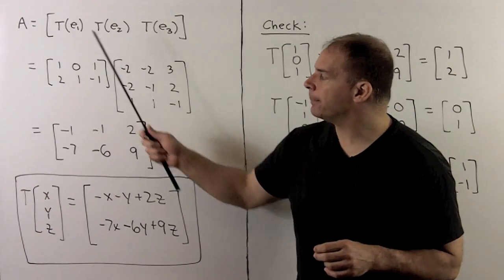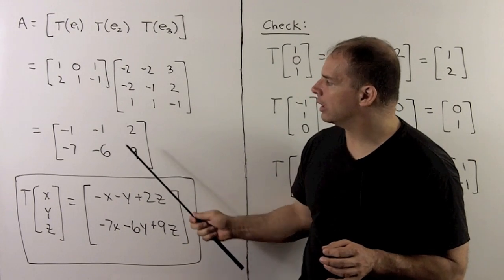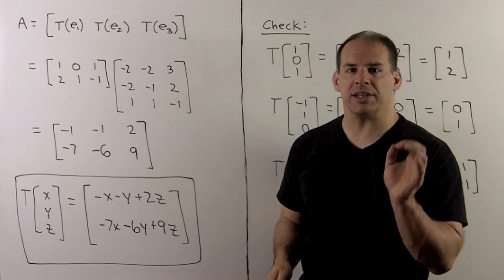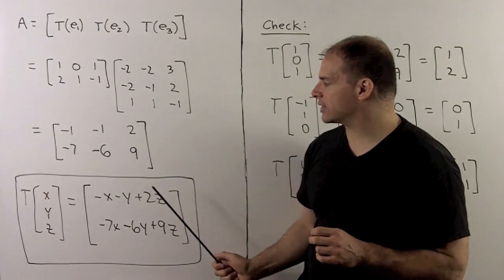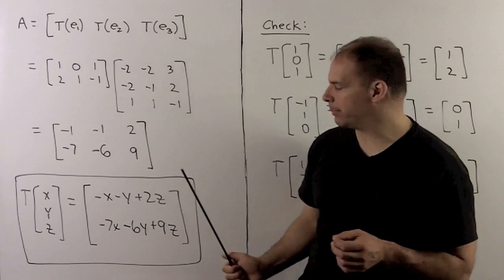Multiplying by the inverse, we isolate A to get the following 2 by 3 matrix. We'll take this, multiply by the vector (x,y,z). So we get our answer. T of (x,y,z) is equal to (-x - y + 2z, -7x - 6y + 9z).